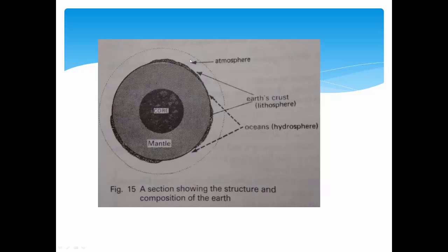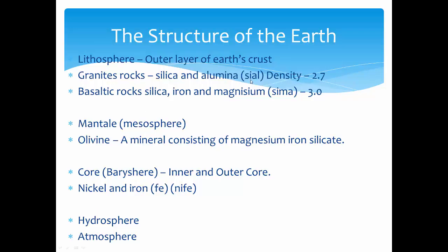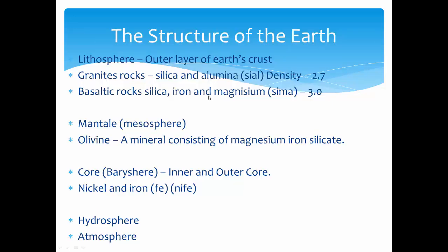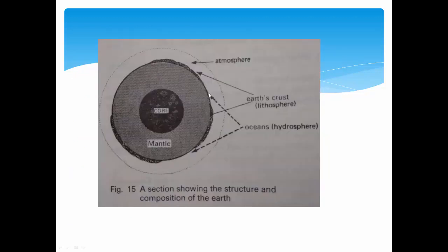Looking at the diagram, the layer surrounding the Earth is the atmosphere, which contains nitrogen and oxygen — oxygen at 21%. The upper Earth's crust is made of granite rocks, lower density, mainly silica and aluminium — SIAL. The ocean crust is SIMA — silicon and magnesium. The mantle is mainly magnesium and iron, and the core is nickel and iron — NIFE. This is a cross-section showing the structure and composition of the Earth.